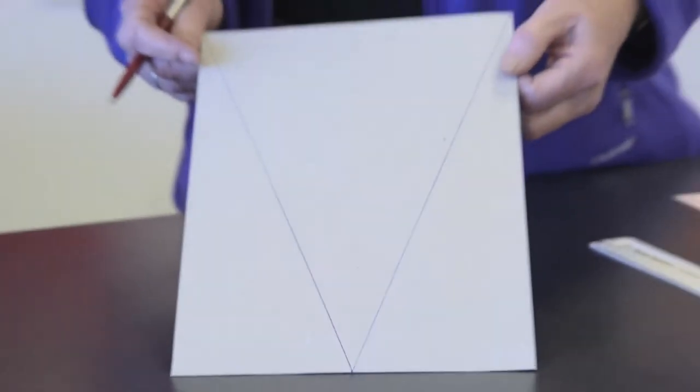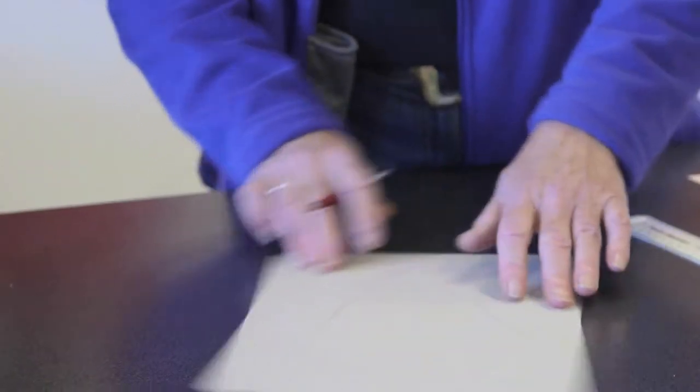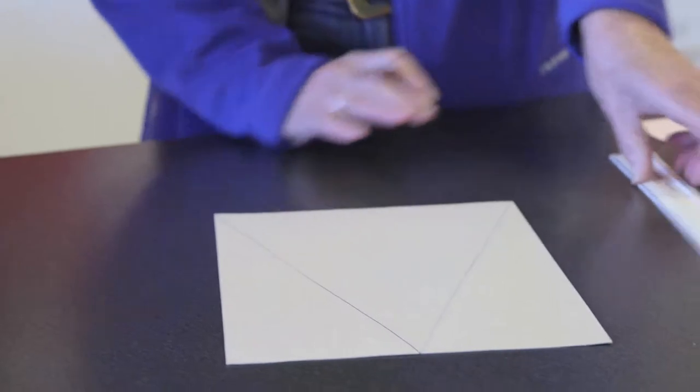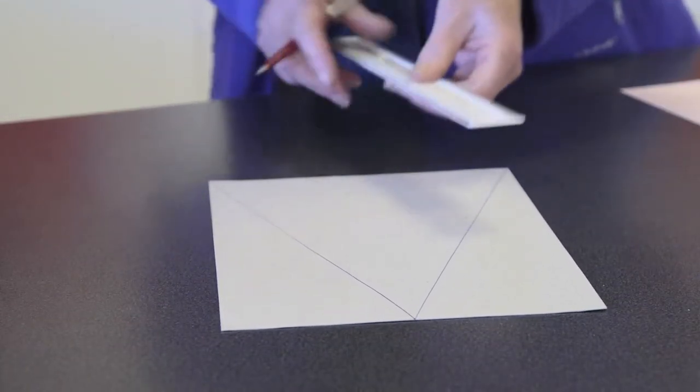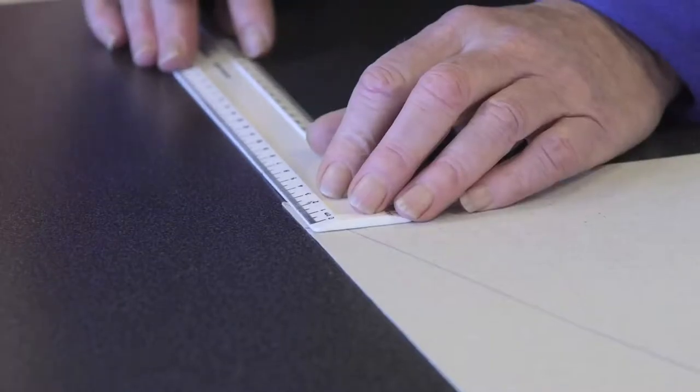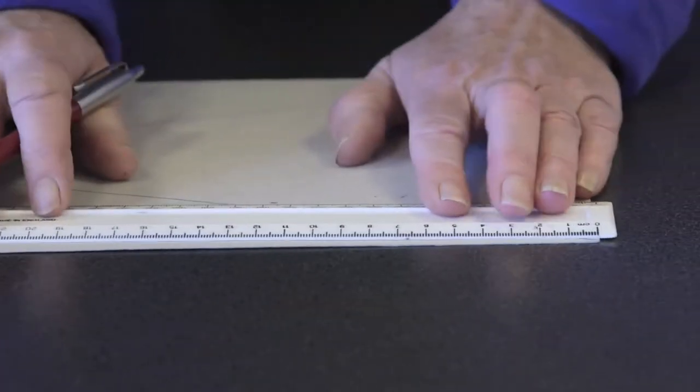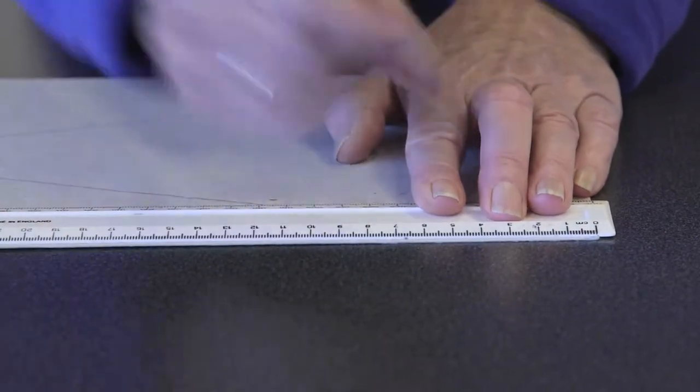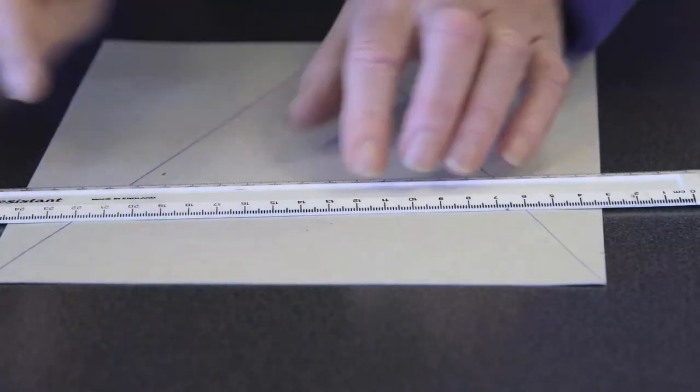But now we have to mark on it the line at 19 centimeters, which is going to be the top of the flag. So the best way to do that is to mark down from that top edge, three centimeters on each side. Three centimeters on that side and then three centimeters on the other side. Now draw a line between those two points.